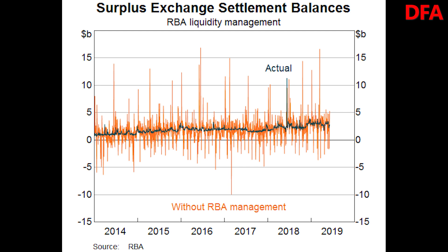The RBA monitors and forecasts these changes actively through the day. It offsets — i.e. sterilizes — these changes in ES balances with its daily open market operations, so that government receipts and payments do not affect the aggregate level of ES balances. If transactions that affect system liquidity were not offset by the RBA, ES balances would become much more volatile and the payment system would suffer frequent disruptions, ultimately leading to a more volatile cash rate.